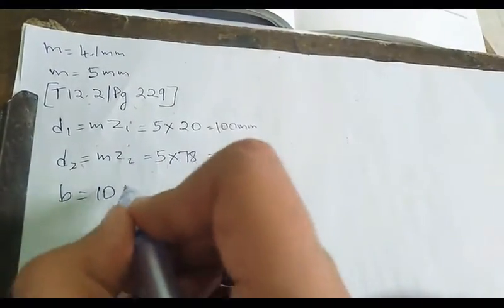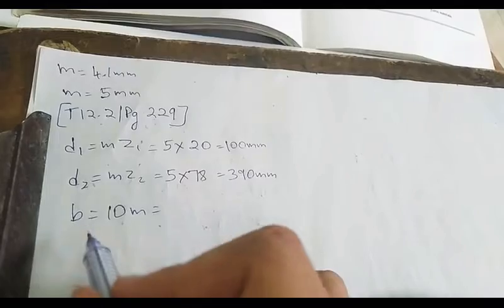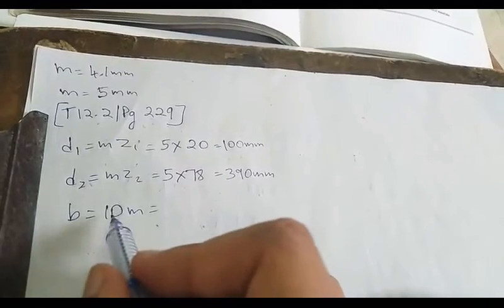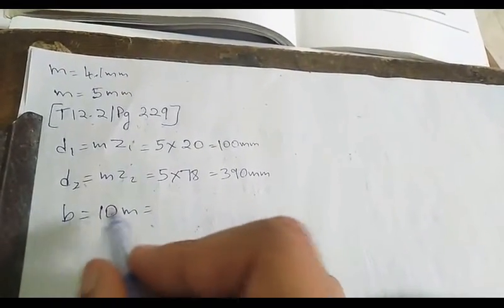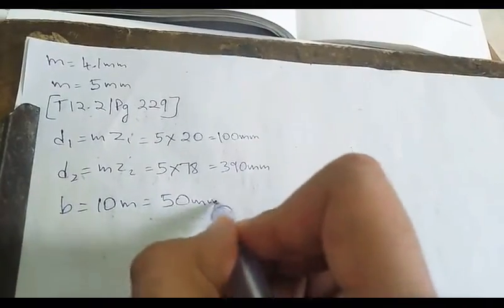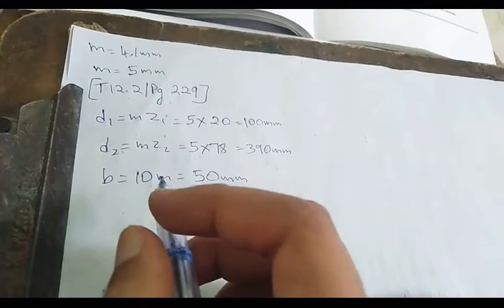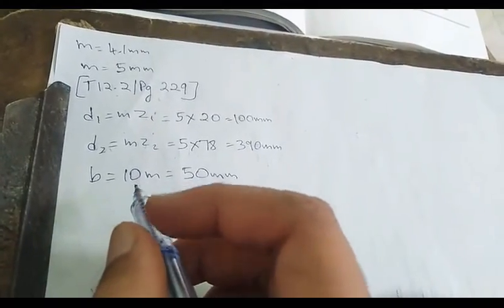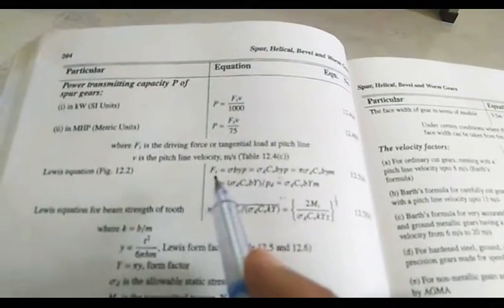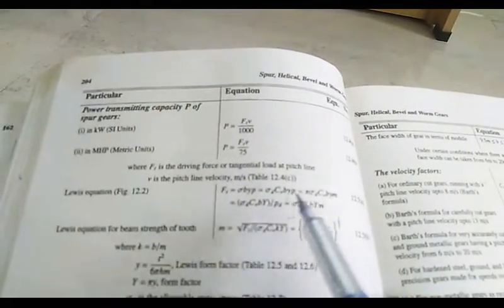Face width b is equal to 10m, and b_k is equal to b/m. So b = 10 × m = 10 × 5 = 50 mm. Now we shall apply the Lewis equation and check for σd using ft and the allowable stresses.